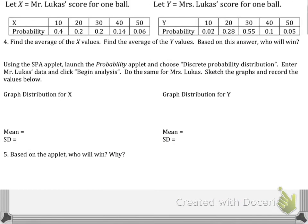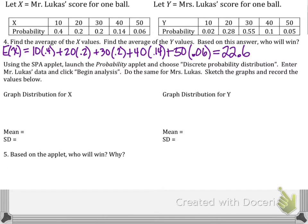So let's continue to analyze the situation. I went ahead and grabbed the tables from the previous page for us to find the average of the X values and find the average of the Y values. And again, think about who will win looking now at just average values. So the expected value will be calculated by taking each of the values and multiplying by it the probability of that outcome. So we'll start by multiplying 10 times 0.4 and then we'll multiply 20 times 0.2 and we will add those values together. Then we'll add 30 times the 0.2 and continue by multiplying 40 times 0.14 and 50 times 0.06 to get an expected value of 22.6 points in the skee-ball game for Mr. Lucas. That's his average score.